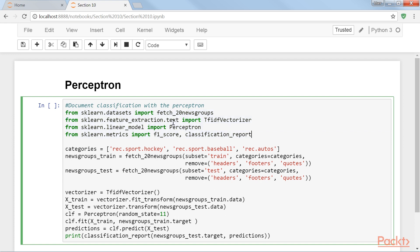In this example, we train a perceptron to classify documents from the 20 newsgroups dataset. The dataset consists of approximately 20,000 documents sampled from 20 Usenet newsgroups. The dataset is commonly used in document classification and clustering experiments. Scikit-learn even provides a convenience function for downloading and reading the dataset, that is, fetch underscore 20 newsgroups.